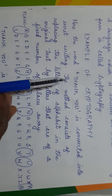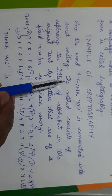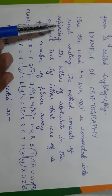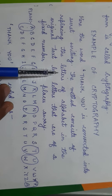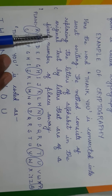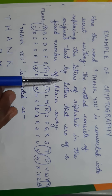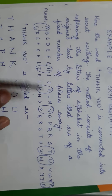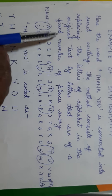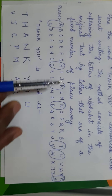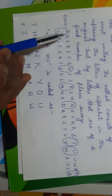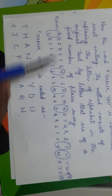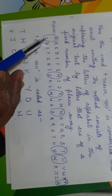Here we will discuss an example of cryptography. The word 'thank you' is converted into secret writing. The method consists of replacing the letters of the alphabet in the original text with letters that are a fixed number of places away. The fixed number of places away is the important point.